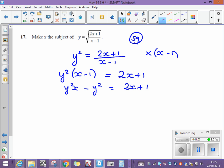Now, everything containing x, I want to have on one side. And I think I'm going to do it by getting rid of this y squared from the left. So I'm going to add y squared to both sides. And at the same time, I'm going to subtract that 2x from both sides.